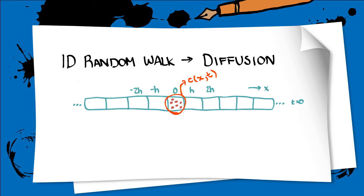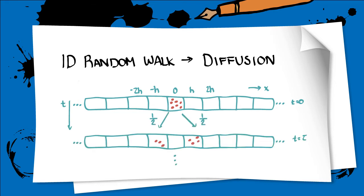Define c to be the expected number of particles. At each time step, assume that a particle will move right and left with equal probability.